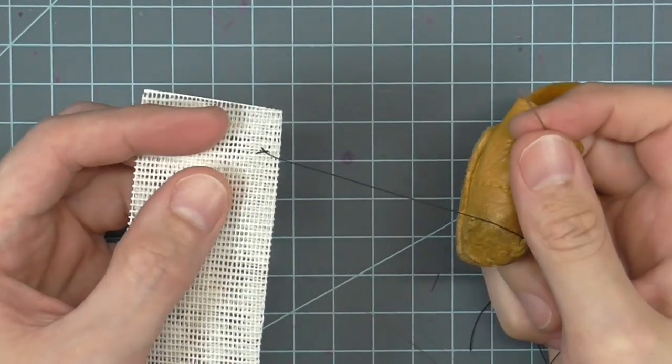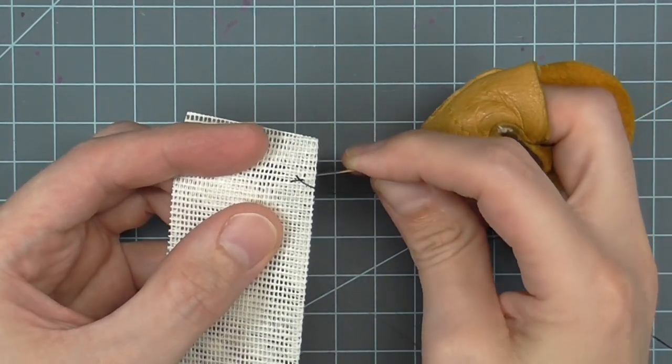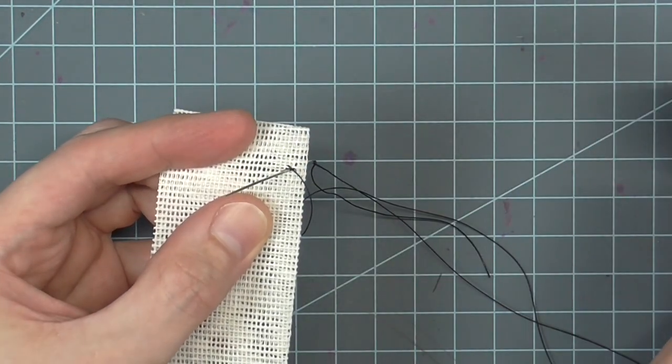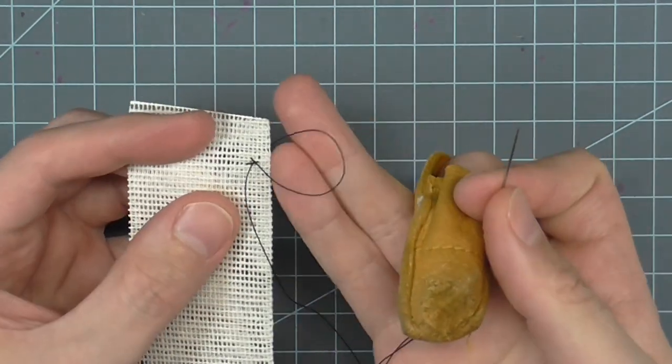With your thread secured, stitch through where the thread is coming out again, forming a loop. Pass the needle through the loop and tighten the thread. This is just a stitch loop to start the actual stitching.